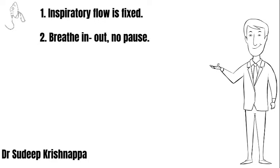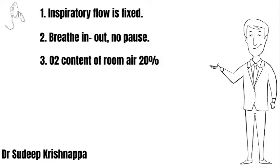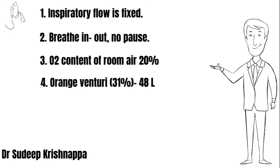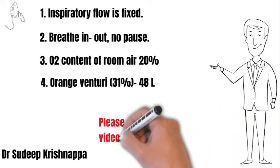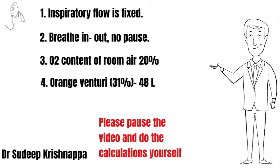The second assumption is that the person breathes in and out exactly as defined by the parameters set out — namely tidal volume, respiratory rate, and I:E ratio — with no pauses in between. The third assumption is that the oxygen content of room air is assumed to be 20% for ease of calculations, as against the actual 21%. The last one — more of a selection than an assumption — I have chosen an orange Venturi to compare with Hudson's face mask, the reason being the orange Venturi has a 6-liter recommended flow for an FiO2 of 31%.